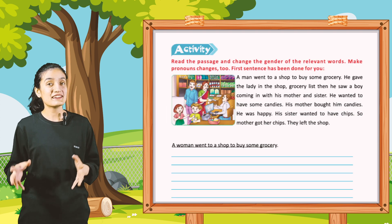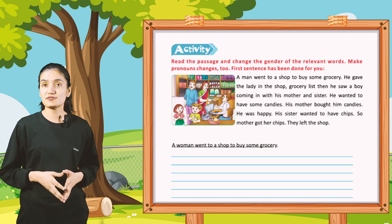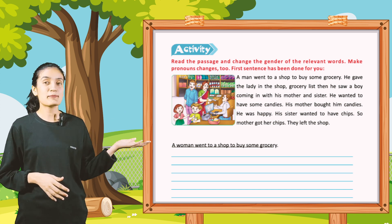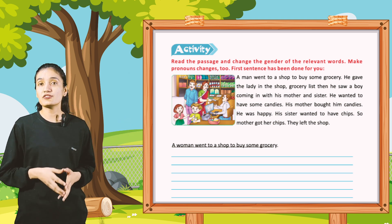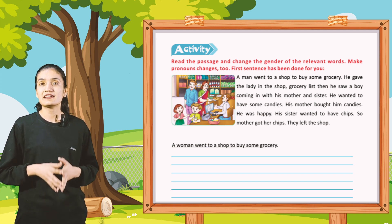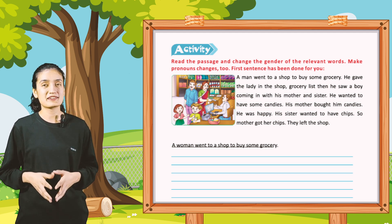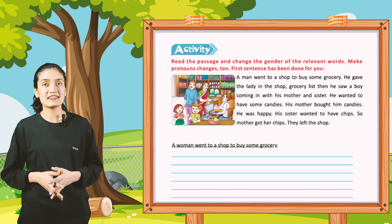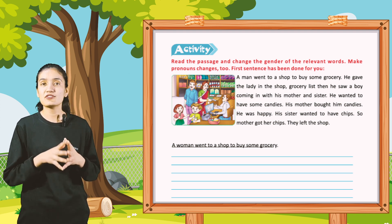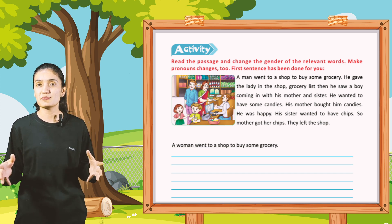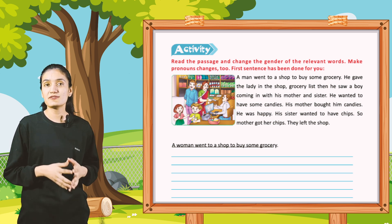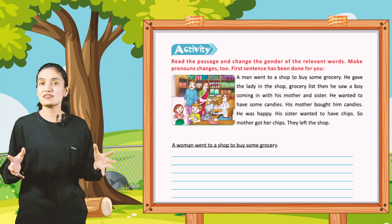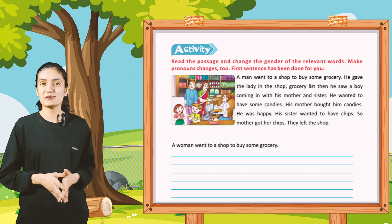Now let's do the activity: read the passage and change the gender of the relevant words. Make pronoun changes — the first sentence has been done for you. A man went to a shop to buy some groceries. He gave the lady in the shop a grocery list. Then he saw a boy coming in with his mother and sister. He wanted to have some candy. His mother bought him candies — he was happy. His sister wanted to have chips, so mother got her chips. They left the shop. A woman went to a shop to buy some groceries. In this way, you have to change this paragraph by your own.